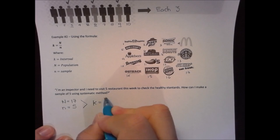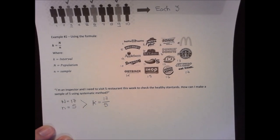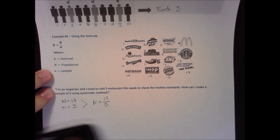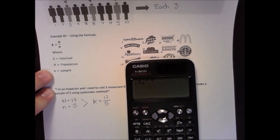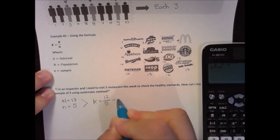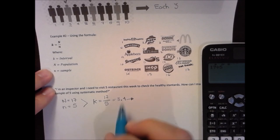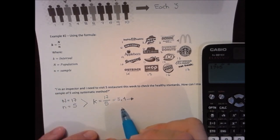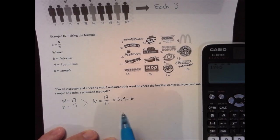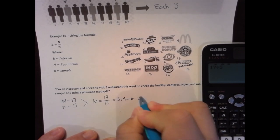So k equals 17 over 5. Using a calculator, 17 divided by 5 equals 3.4. Then we round the number: if the decimal is 0.1 to 0.4, round down to the lower integer; if it's 0.5 to 0.9, round up to the next integer. In this case, 3.4 rounds down, so k equals 3. The interval is 3.